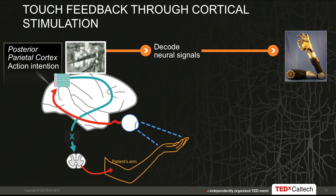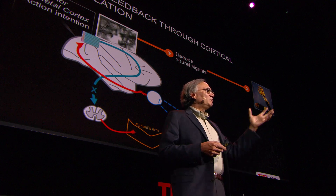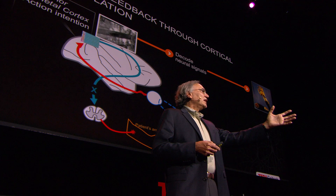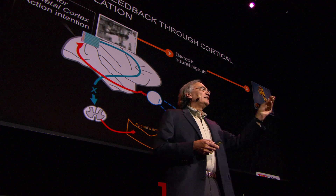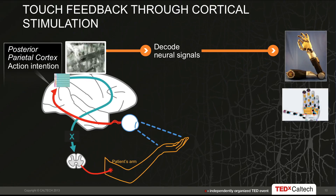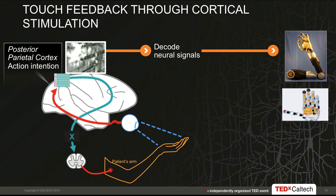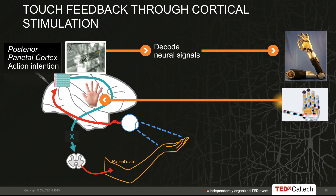The idea is to use these intention signals to drive the robotic limb. But there is a problem: for a paralyzed patient, they can use visual feedback to correct the movement, but to really do fine dexterous manipulation of an object, you also need touch, and they don't have that modality. So we're sensorizing the robotic hand and using information from touch sensors to stimulate, through another implant, the hand representation in the somatosensory cortex. This means two implants — one for generating commands to move the limb, and the other for feedback of the feeling of touch — completing the loop.